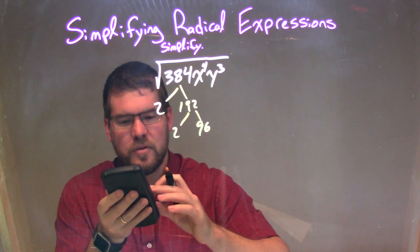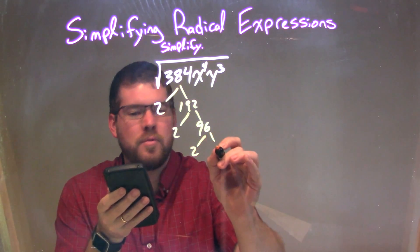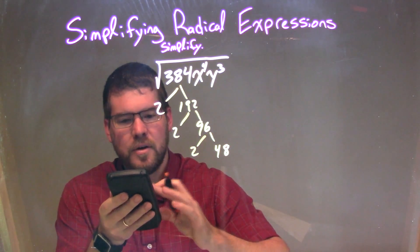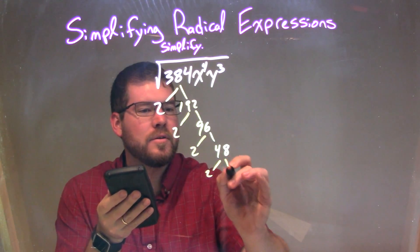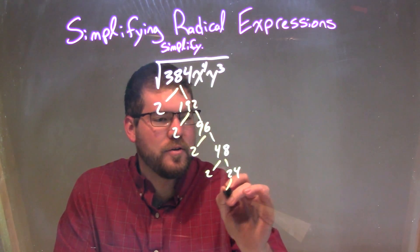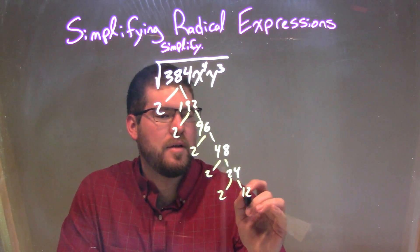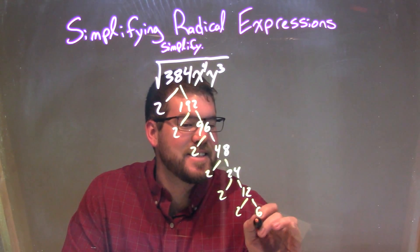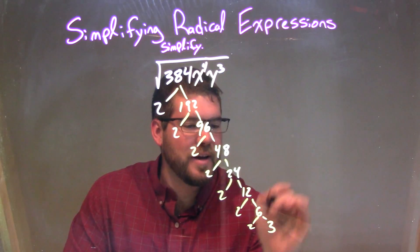96 divided by 2 — let's just keep going here — gives us 2 and 48. 48 divided by 2 is 24. 24 divided by 2 is 12, and 12 divided by 2 is 6, and 6 is 2 and 3.